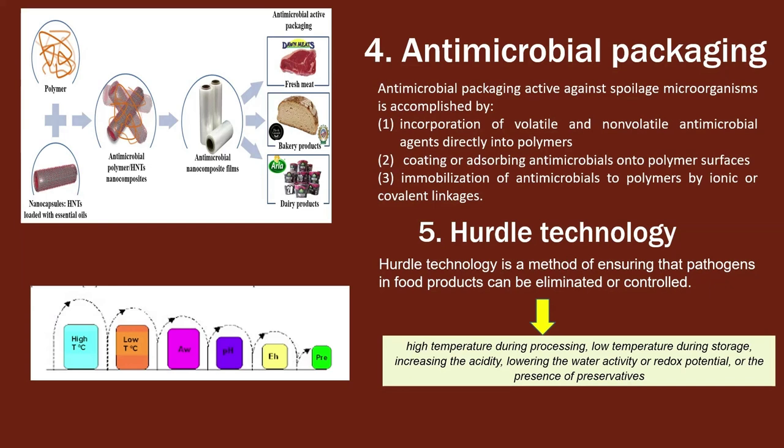The last alternative technology is hurdle technology, which is a method of ensuring that pathogens in food products can be eliminated or controlled, meaning the food product will be safe for consumption and its shelf life will be extended. Hurdle technology usually works by combining more than one approach. Examples include high temperature during processing, low temperature during storage, increasing the acidity, lowering the water activity or redox potential, and the use of preservatives.